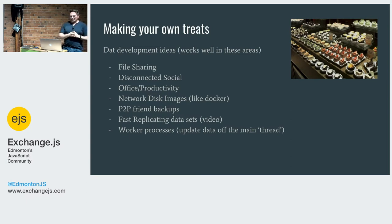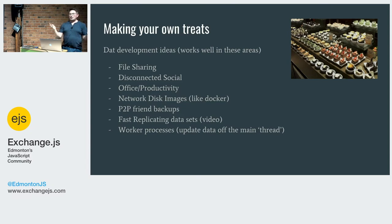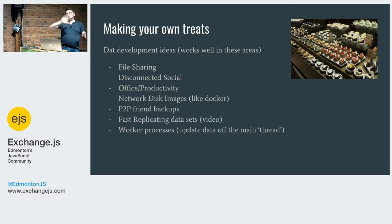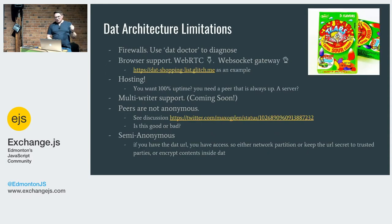Another neat concept is peer-to-peer friend backups — the idea that among your friends you each have a Dat and share like 30 percent of your data, so if yours goes down your friends can help you bring it back up. Fast replicating data is great for things like video streaming. One idea I really like is worker processes — we use this at our company where you have data that needs augmenting with expensive operations. Beefy servers on Amazon update the Dat behind the scenes and the main ones serve it out.